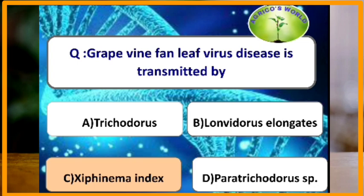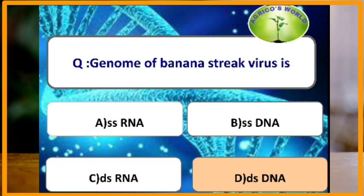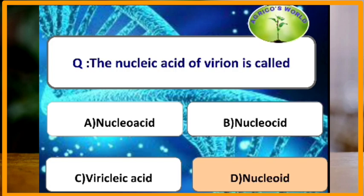Grapevine fanleaf virus disease is transmitted by Xiphinema index. Tomato spotted wilt virus is transmitted by Thrips tabaci. The genome of banana streak virus is double-stranded DNA. The nucleic acid within a virion is called the nucleoid; the protein coat is the capsid; together they form the nucleocapsid.